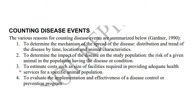So basically, we're talking about our response: what are the needs and facilities needed for us to respond to such animal health eventualities? And number four, to evaluate the implementation and effectiveness of disease control and prevention programs — which leads to the point of what number three is talking about.